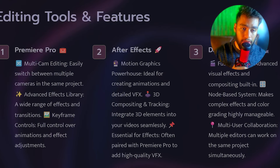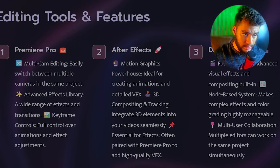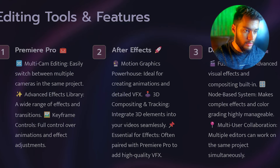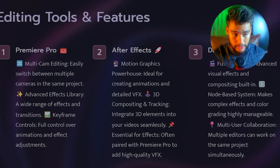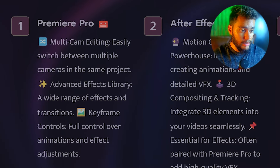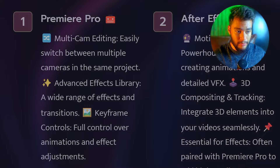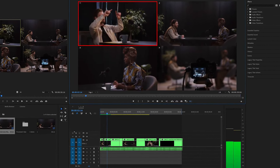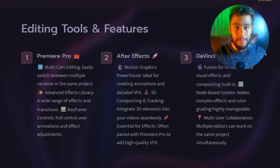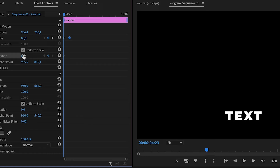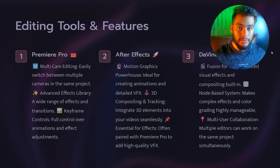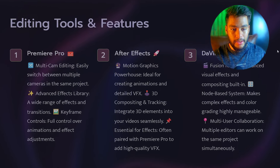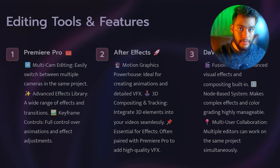Next topic: editing tools and features. I'm not going to do the ranks now — it's going to go software by software. First off, we have Premiere Pro. Multicam editing lets you easily switch between cameras in the same project. There are a lot of advanced presets inside of Premiere Pro — for example, transitions, green screens, keyframe controls, and animation controls, which is not a strong point but you can still do it inside of this software.